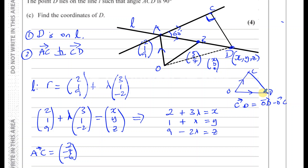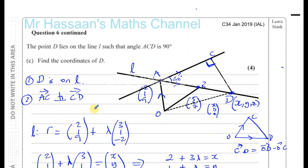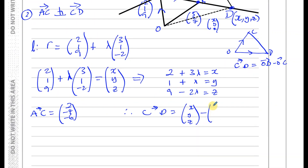So C to D equals OD minus OC. Now OD is the vector (X, Y, Z), and OC — from the last page — is the vector (4, minus 3, 3). So the vector from C to D equals (X, Y, Z) minus (4, minus 3, 3), which gives us X minus 4, Y plus 3, and Z minus 3.